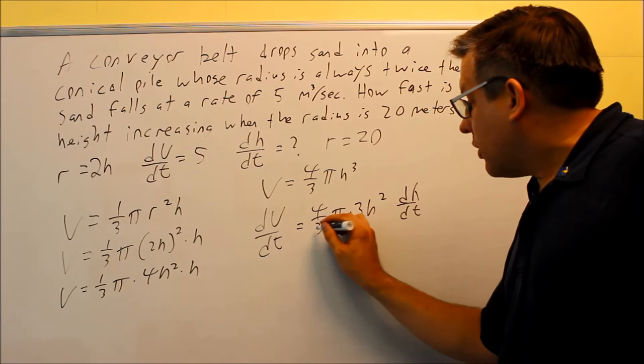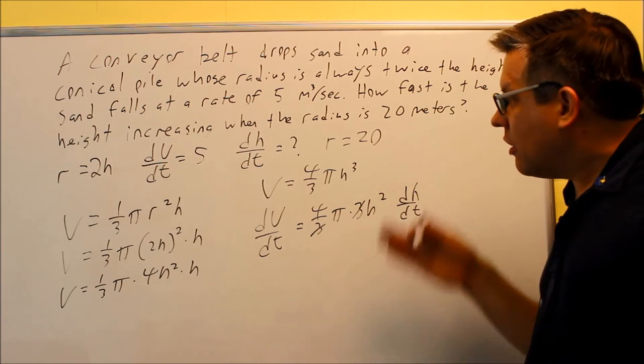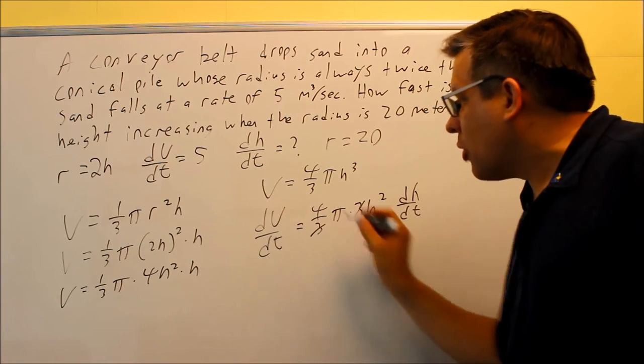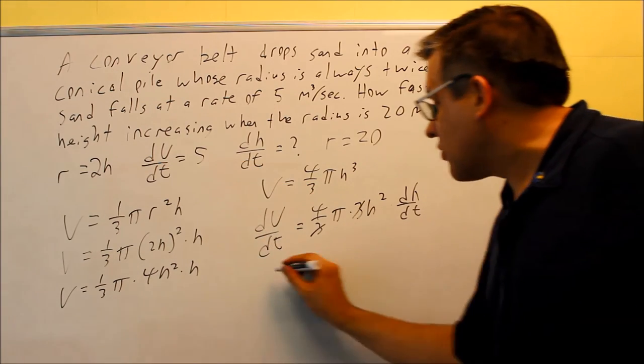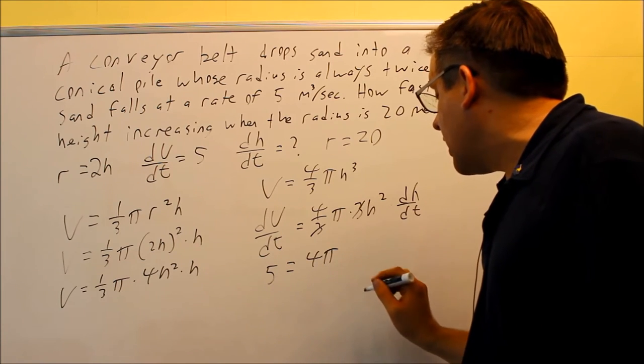I can do a little clean up on this. The 3's are going to cancel. And now I'm ready to plug in information that's been provided here. First we'll start with dV/dt. That was given as 5. So I have 5 equals, and I have 4 pi.